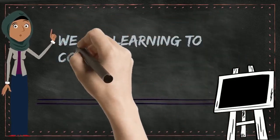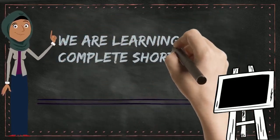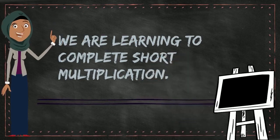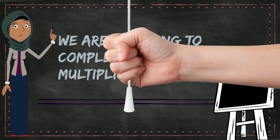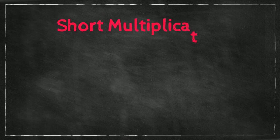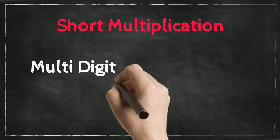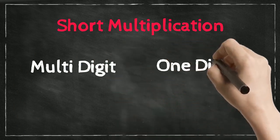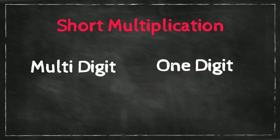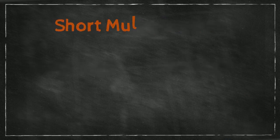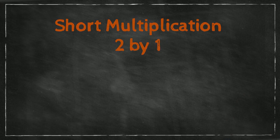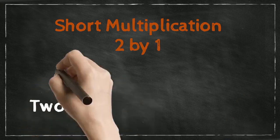In today's numeracy lesson we are learning to complete short multiplication. So what is short multiplication? Short multiplication is when you multiply a multi-digit number by a one-digit number. Today we are learning about the multiplication of a two-digit number like 23 by a one-digit number like 5.